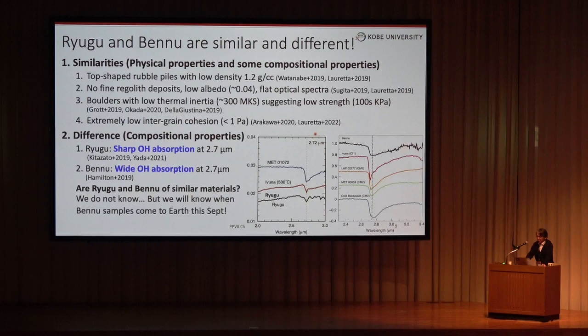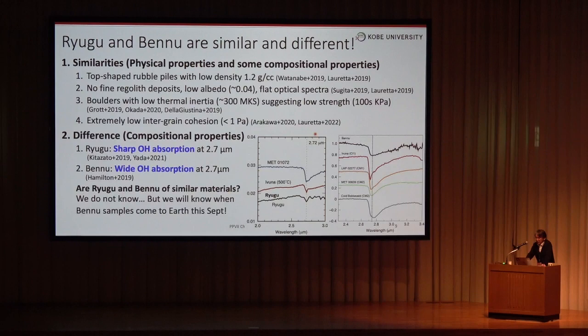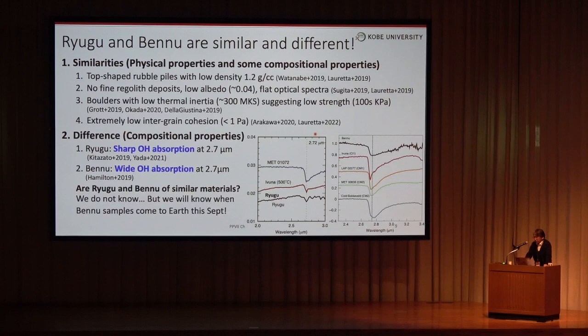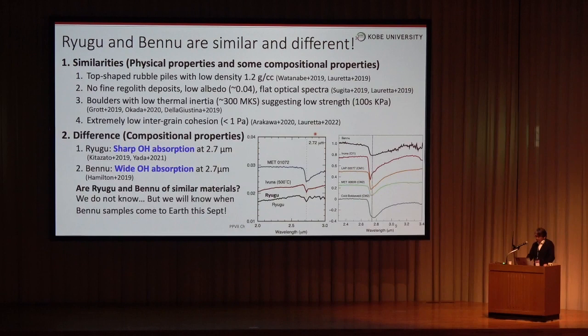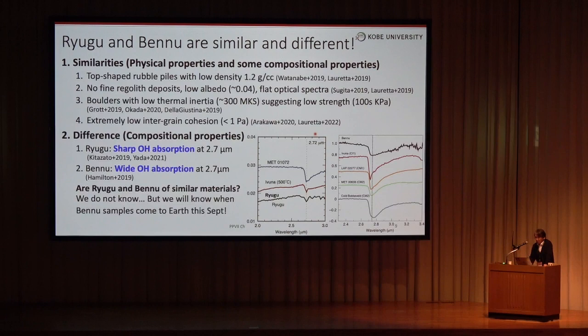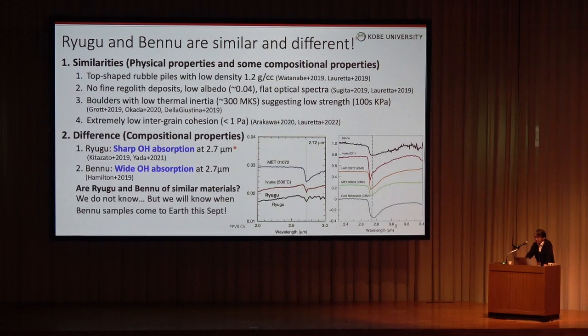Asteroid Bennu is also a small rubble pile asteroid explored by NASA's OSIRIS-REx mission. There are several similarities between Ryugu and Bennu. They are top-shaped rubble pile bodies with low density of about 1.2 grams per cubic centimeter. They have no fine regolith, low albedo, and flat spectra. The boulders have low thermal inertia, suggesting low mechanical strength of several hundred kilopascals. The surface has extremely low intergrain cohesion — less than one pascal, almost no cohesion. Some difference in the composition of water-bearing material was observed, and the reason will be solved after OSIRIS-REx returned samples in September.